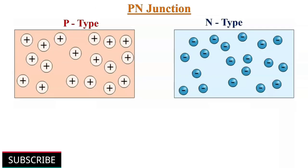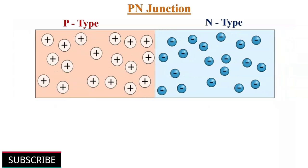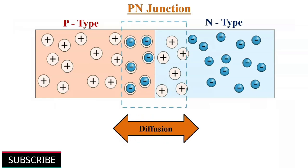When both p-type and n-type semiconductors are suitably joined together, it is known as a p-n junction. At the junction, free electrons from the n-side diffuse over to the p-side, and holes from the p-side diffuse over to the n-side. This charge transfer across the p-n junction is known as diffusion.